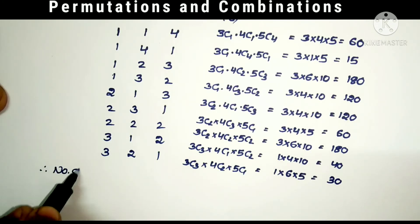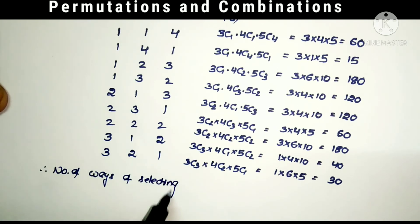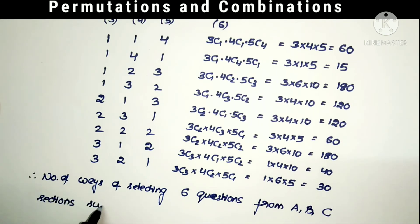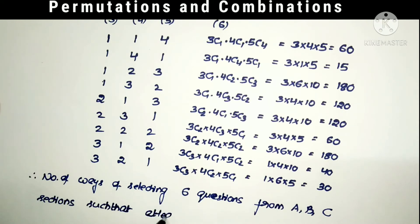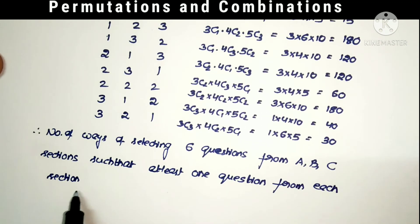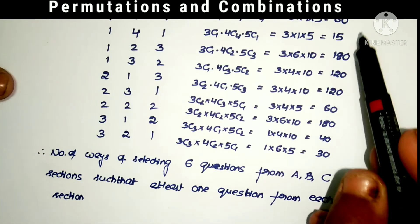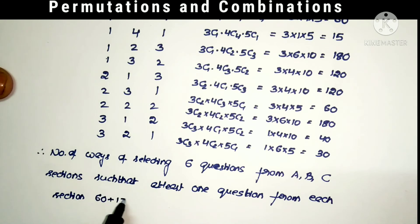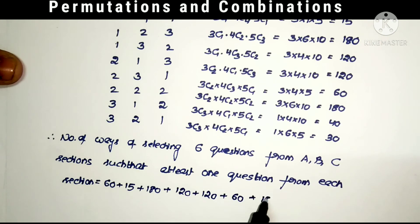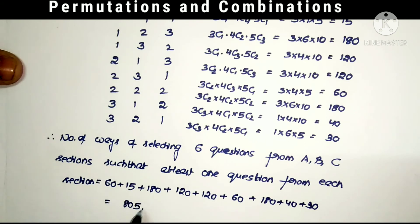Therefore, the number of ways of selecting 6 questions from sections A, B, C such that at least 1 question is chosen from each section equals 60 + 15 + 180 + 120 + 120 + 60 + 180 + 40 + 30 = 805. That is the answer.